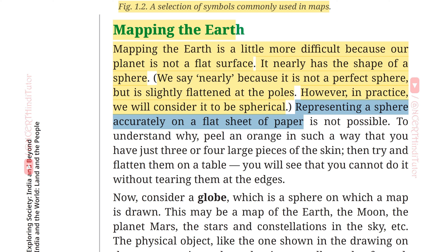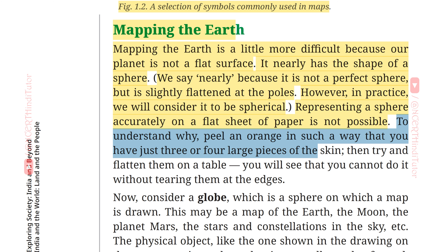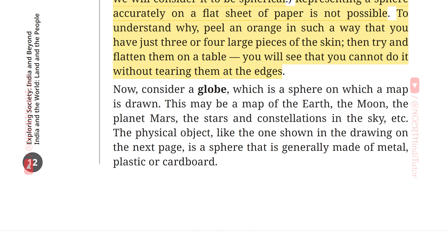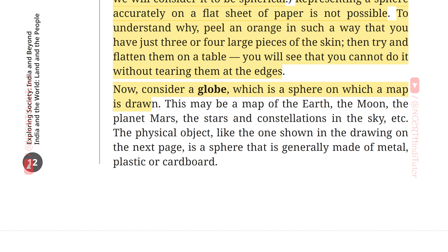Representing a sphere accurately on a flat sheet of paper is not possible. To understand why, peel an orange in such a way that you have just three or four large pieces of the skin, then try and flatten them on a table. You will see that you cannot do it without tearing them at the edges. Now consider a globe, which is a sphere on which a map is drawn.